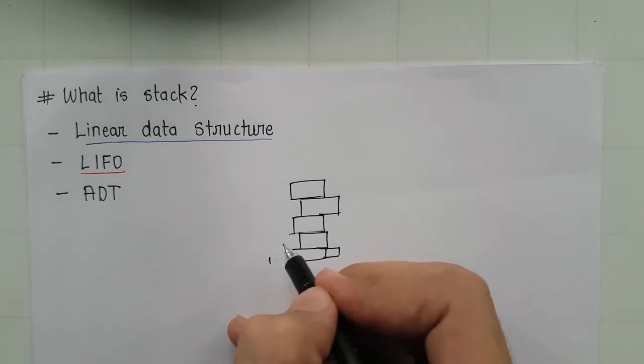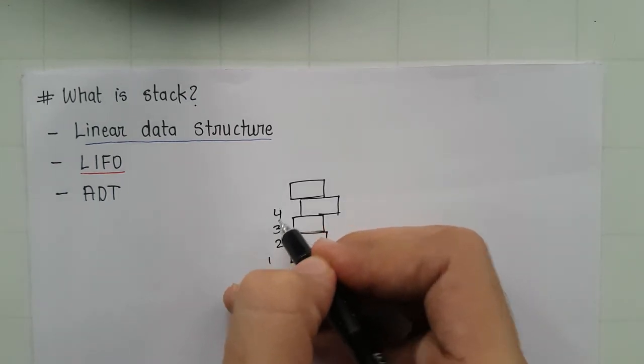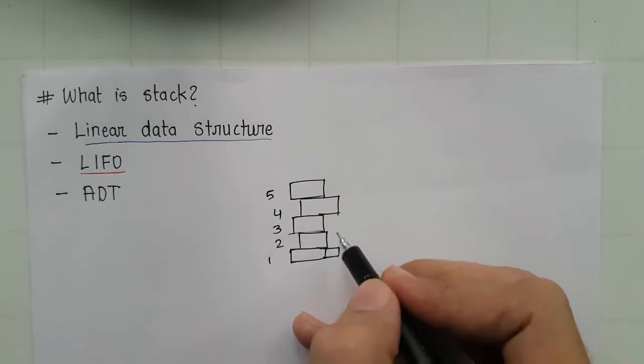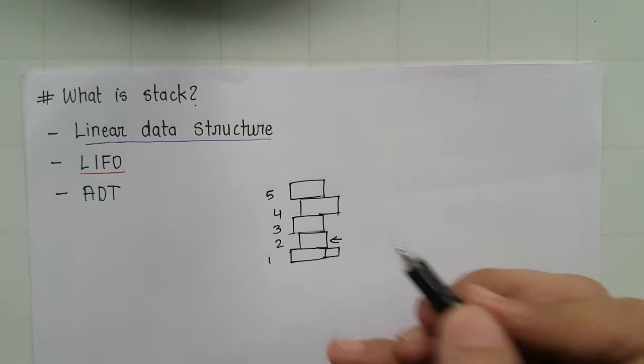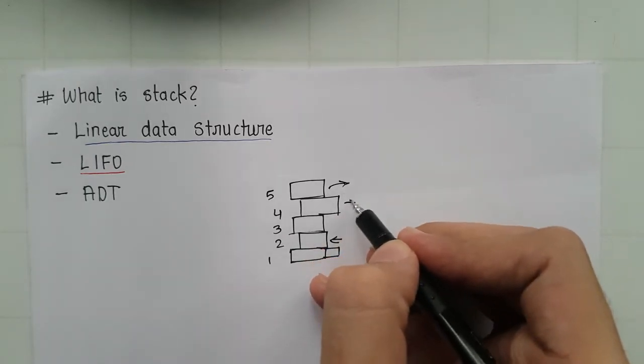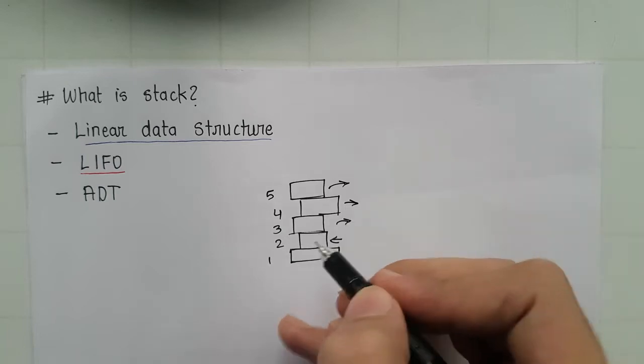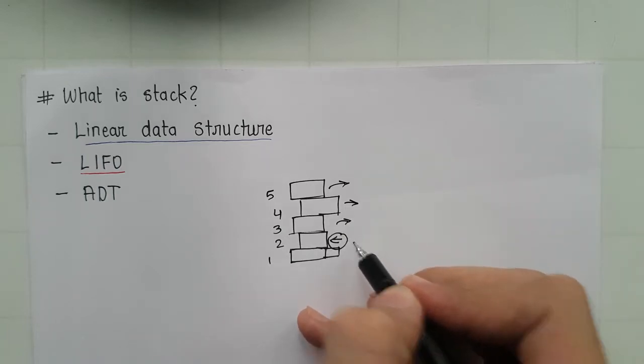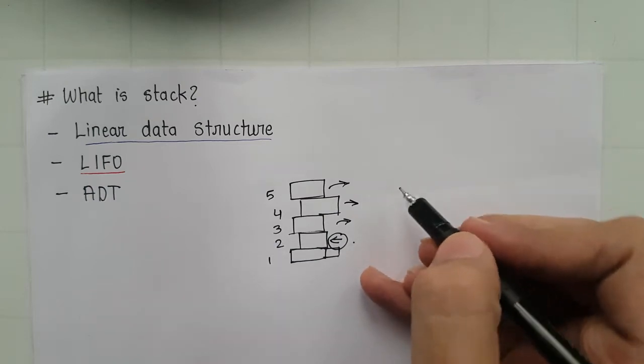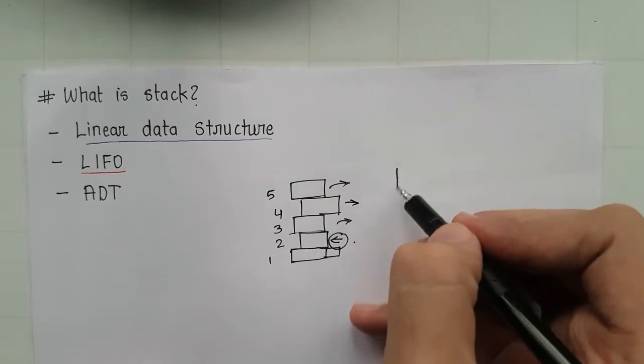So this is our first book, second book, third book, fourth book, and fifth book. So in order to have access to the second book, we need to take off this fifth, fourth, and third book. Then we can have access to the second book. So the same policy is followed by stack. So now we can relate this to the stack.